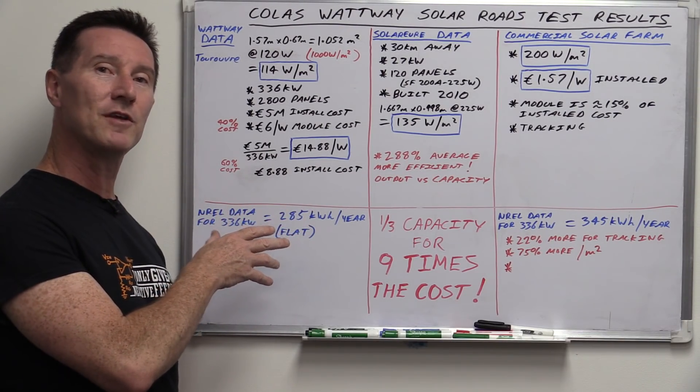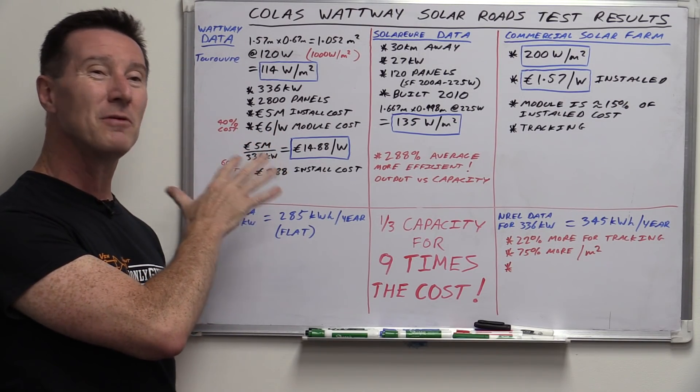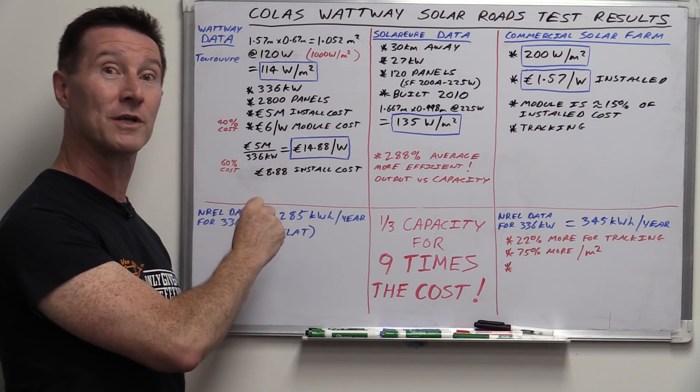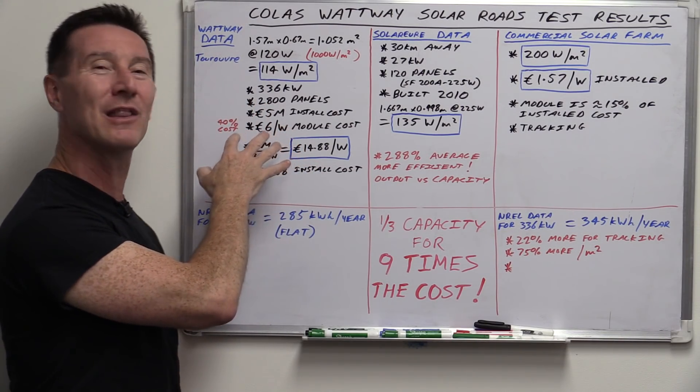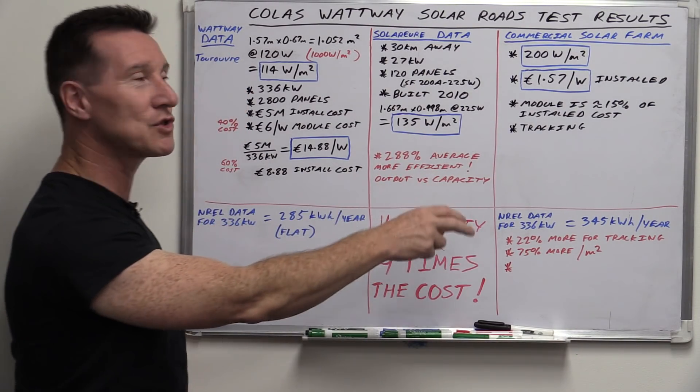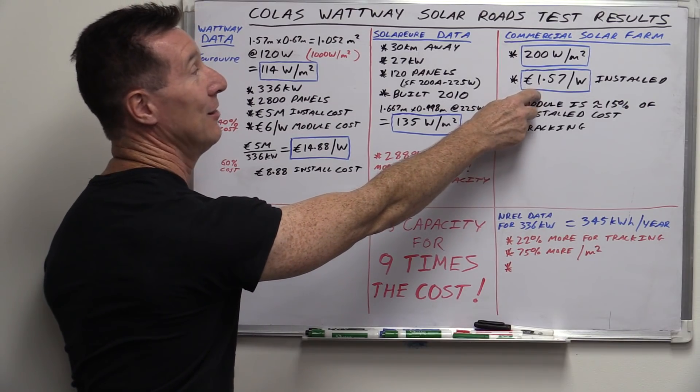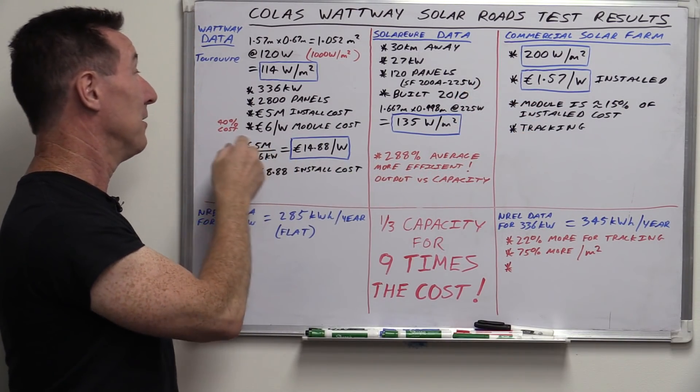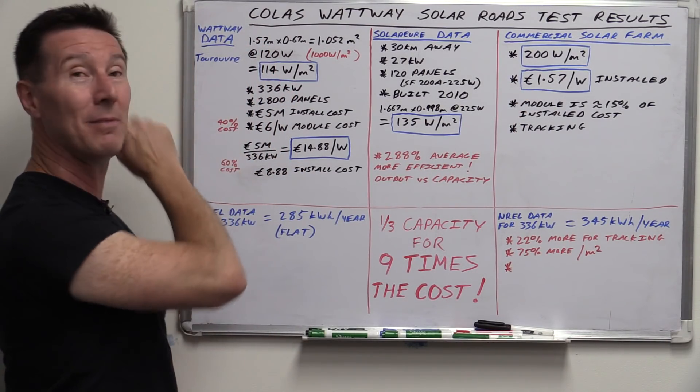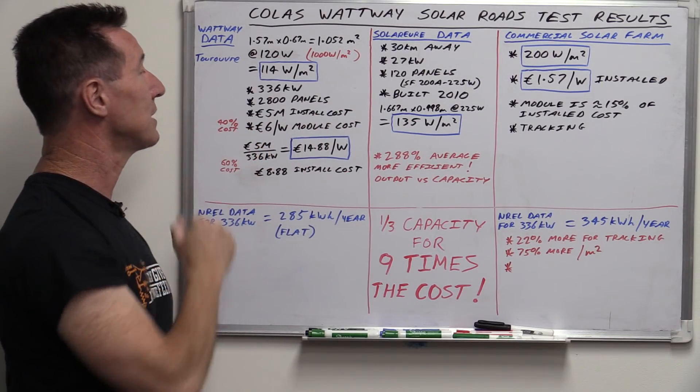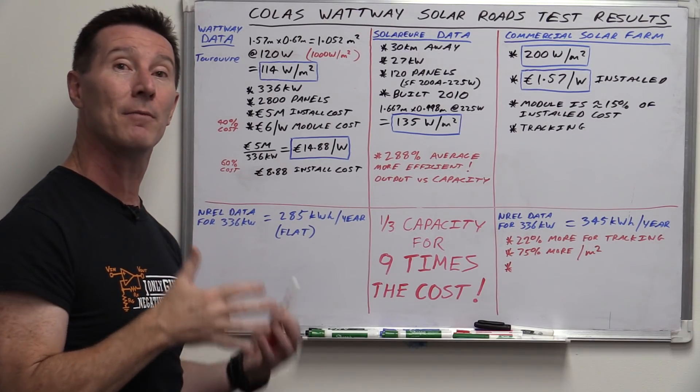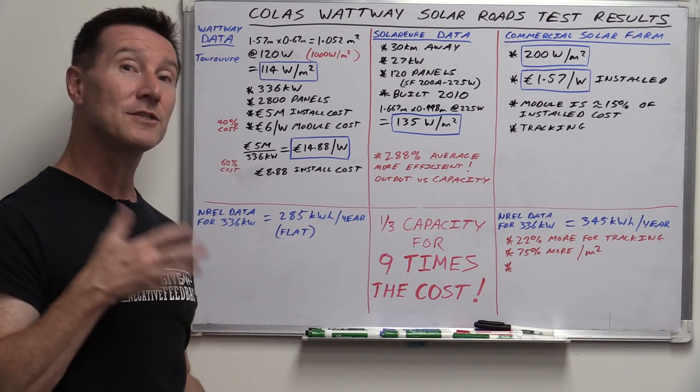Anyway, as I mentioned in the previous video, Colas have said that their sort of best-case pie-in-the-sky figure is going to be 3 euros per watt. That's module cost. So, they might be able to lower the cost by half, but it's never, ever going to get close to a commercial solar farm, which is basically half Colas' best-case estimate installed. And they're still talking about the module, just the module cost at 3 euros per watt.